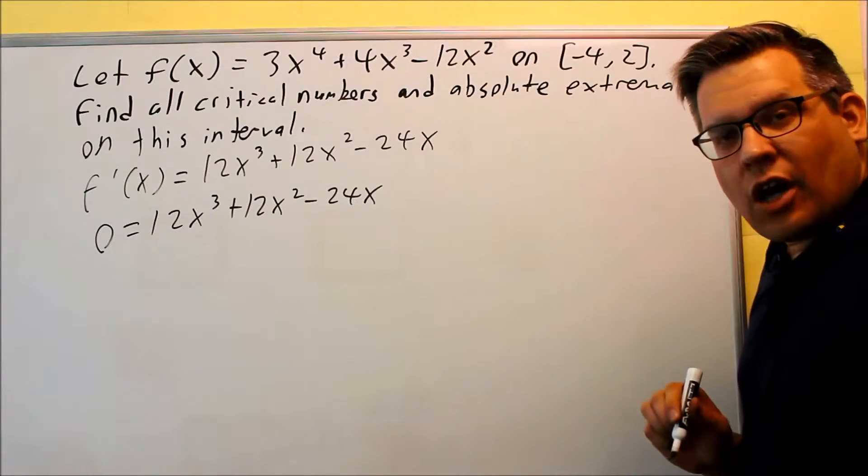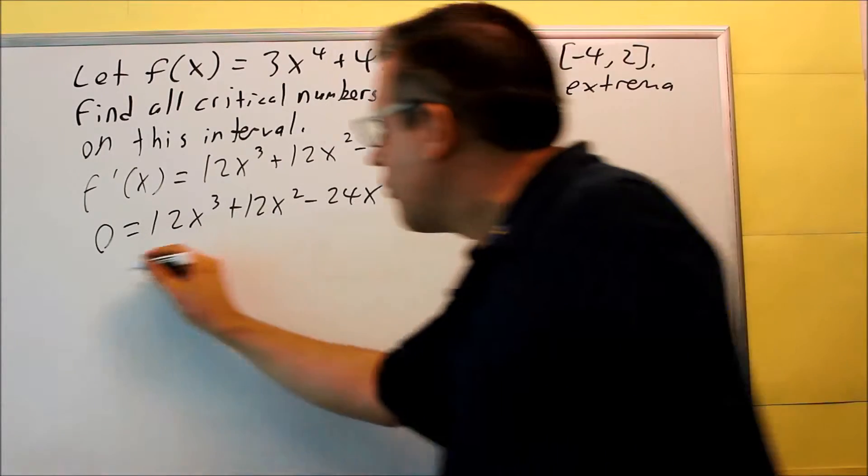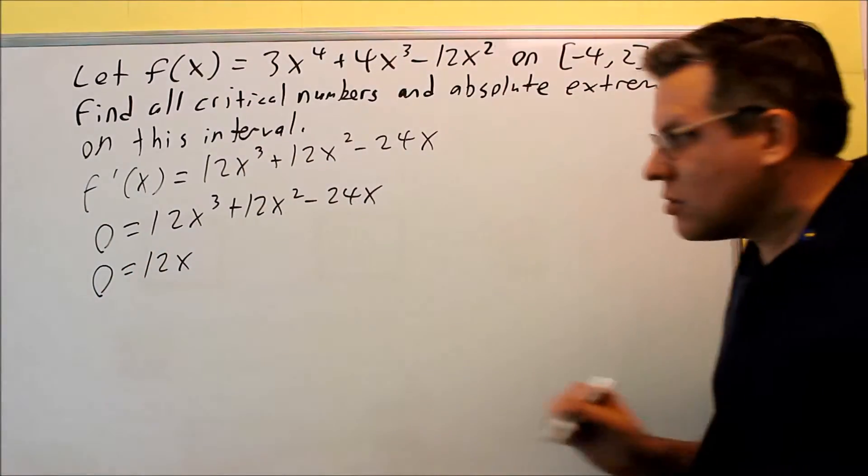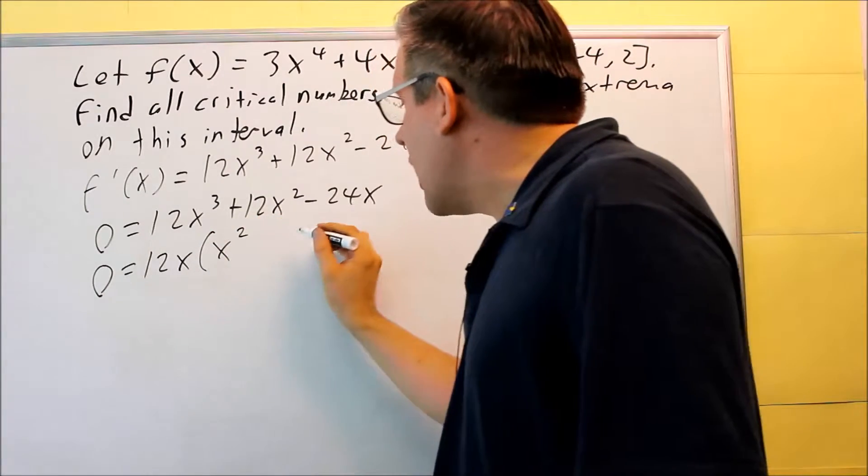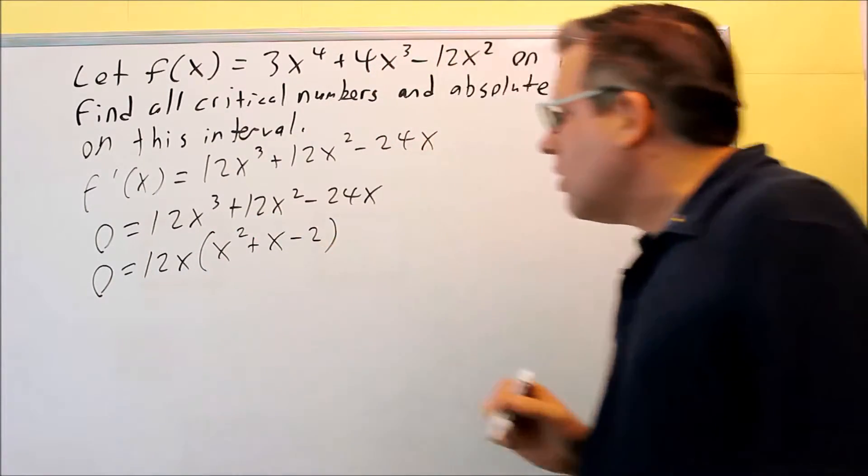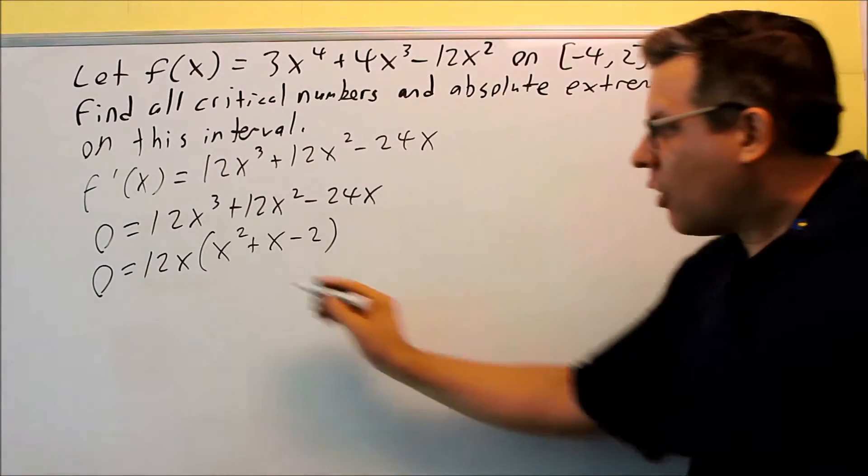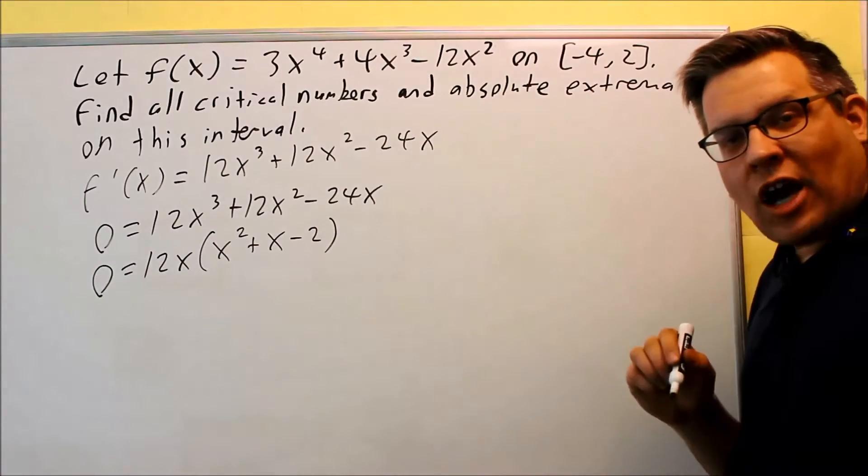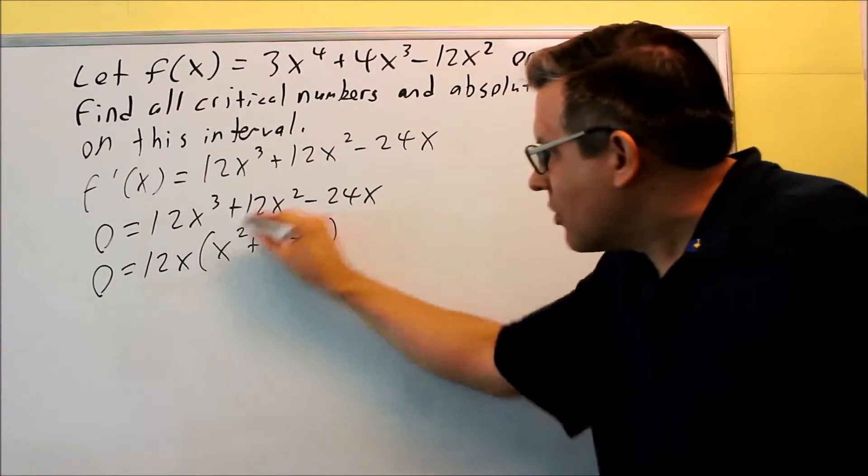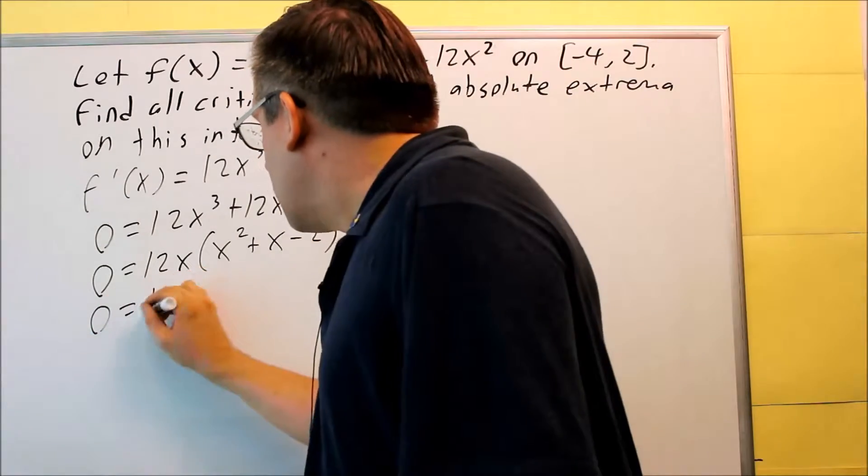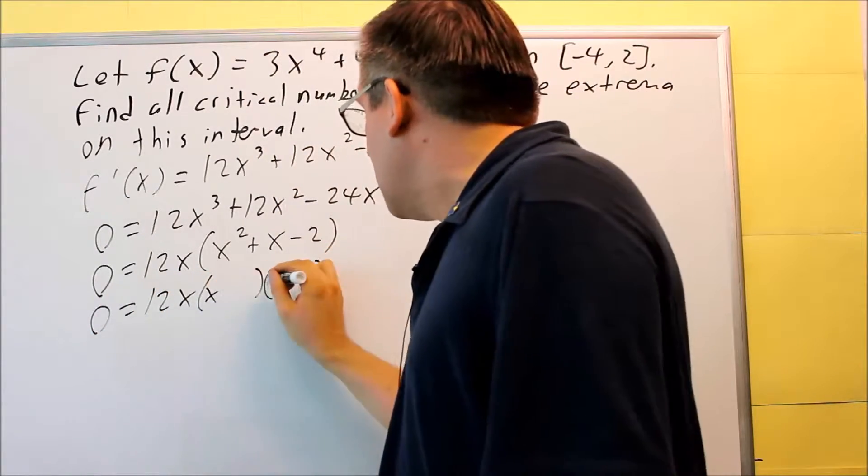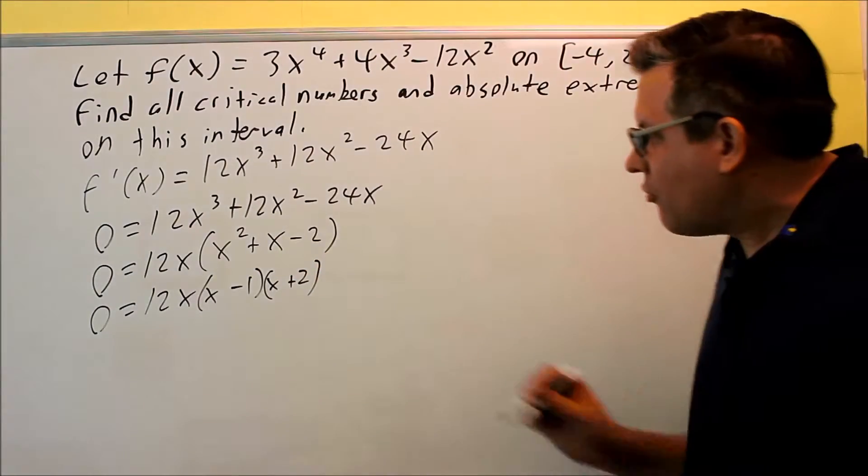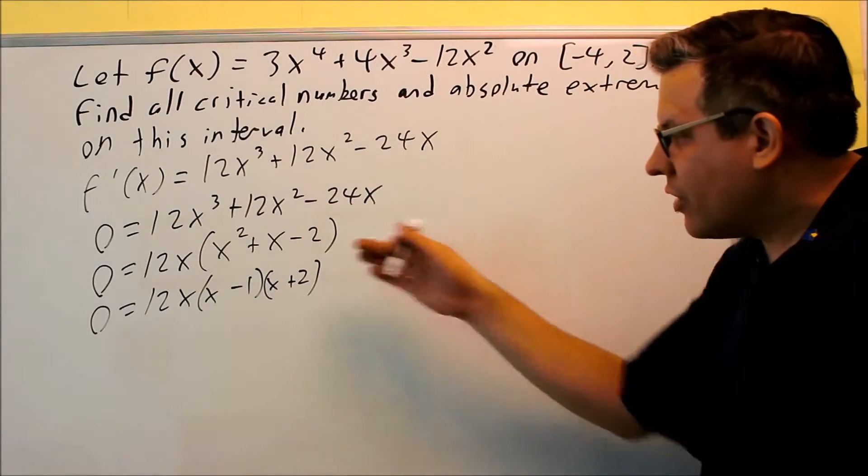In order to solve that, we've got to use factoring. You can take out a common factor first. A common factor for this problem is going to be a 12x. If we factor it out, we get x squared plus x and then minus 2. You want to always factor as far as you can go. This is one that you can factor one more time. We'll do 12x and then we'll factor this one more time. You're going to get x minus 1, x plus 2, factors of negative 2 that add up to positive 1.